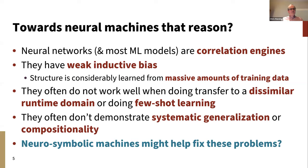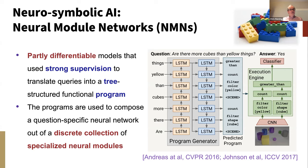A prominent early approach to neurosymbolic AI was the neural module networks of Jacob Andreas and colleagues. These were partially supervised, partially differentiable models that made use of strong supervision from datasets like CLEVR, so that a seq2seq neural model could be built that translated from the natural language sentence into a logical functional program. In neural module networks, this program was used to construct a question-specific neural network, with a collection of specialized neural modules hand-built to do things like filtering, counting, and comparisons — like a set of Lego bricks assembled into a custom structure for the particular question.